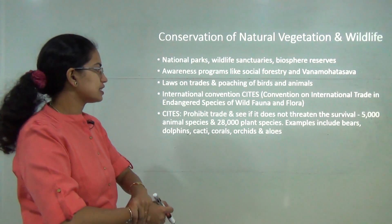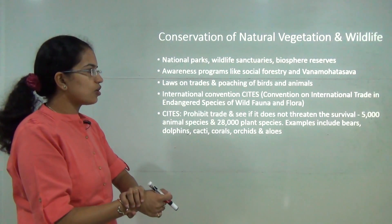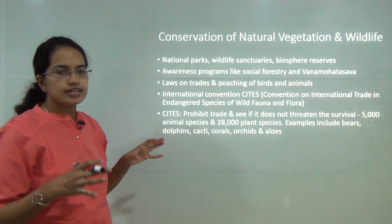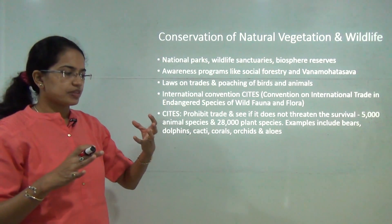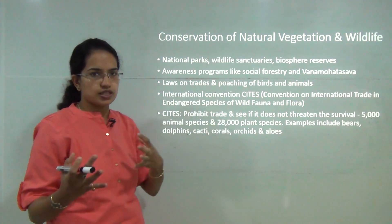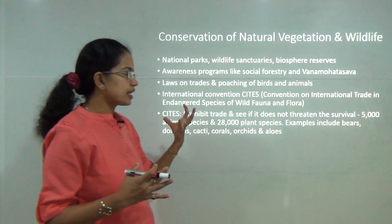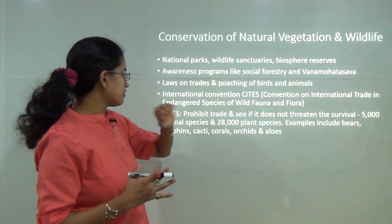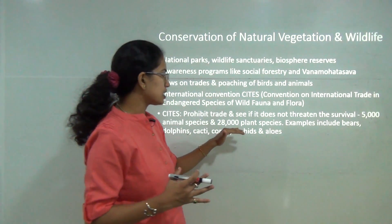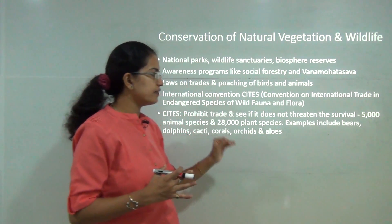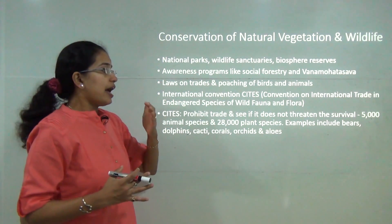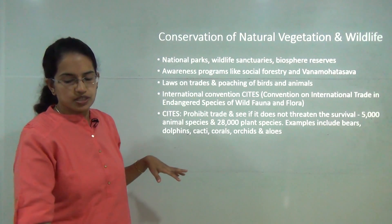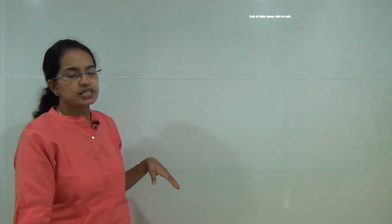One of the most important measures is CITES - the Convention on International Trade in Endangered Species of Wild Flora and Fauna. This international convention prohibits trade and movement of endangered species across regions. It covers nearly 5,000 animal species and 28,000 plant species, including bears, dolphins, cacti, corals, orchids, and aloe.